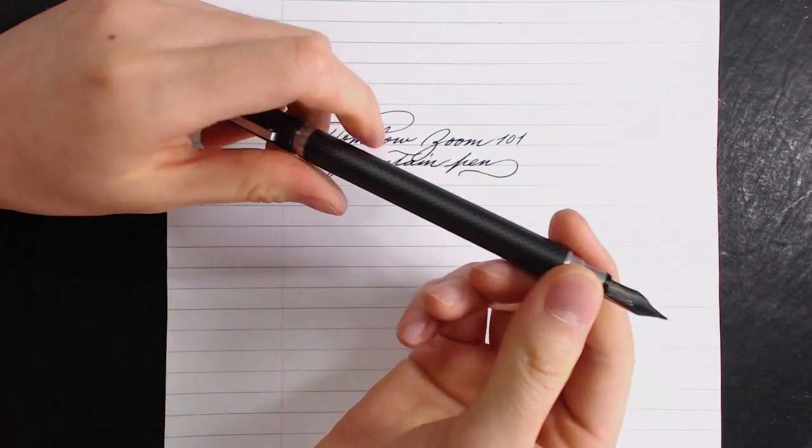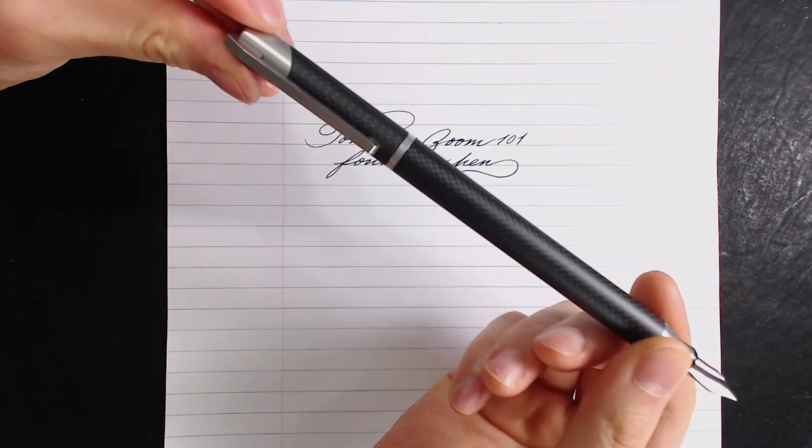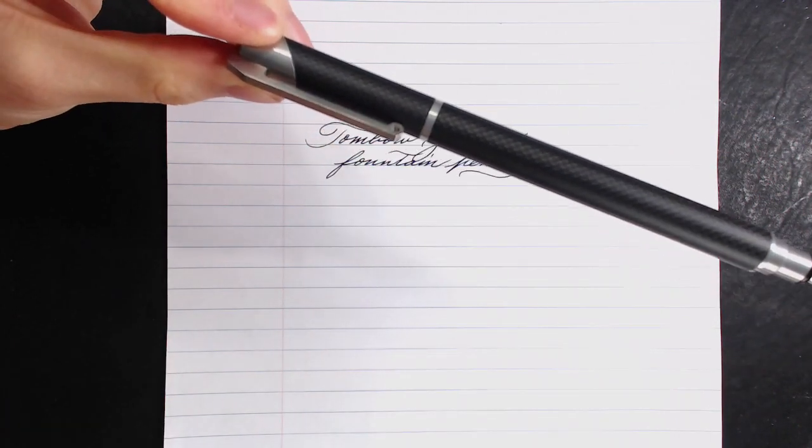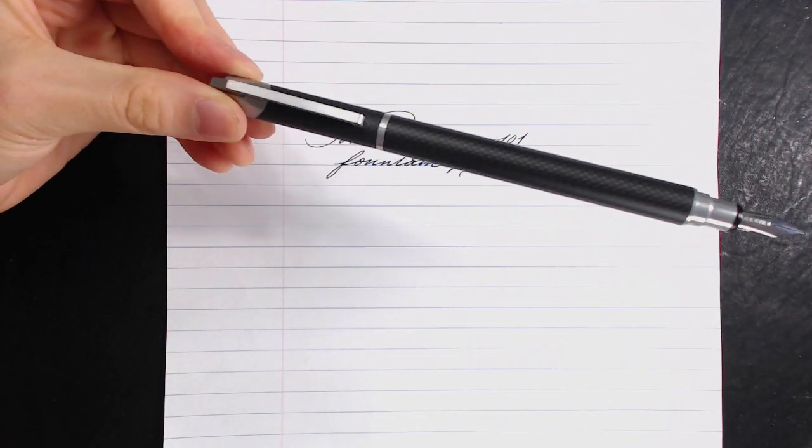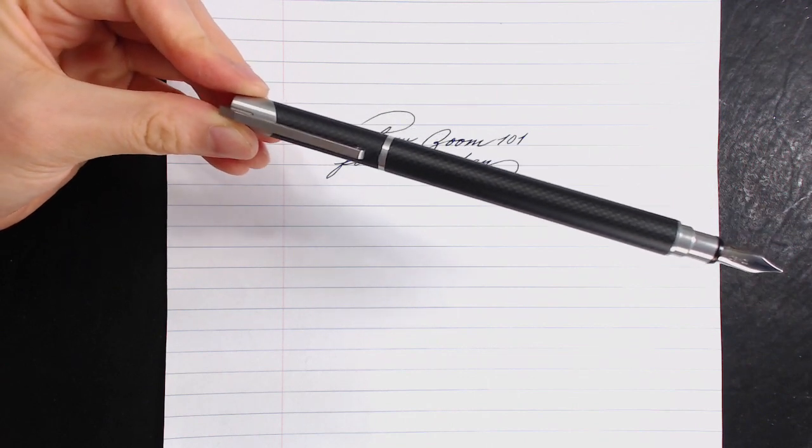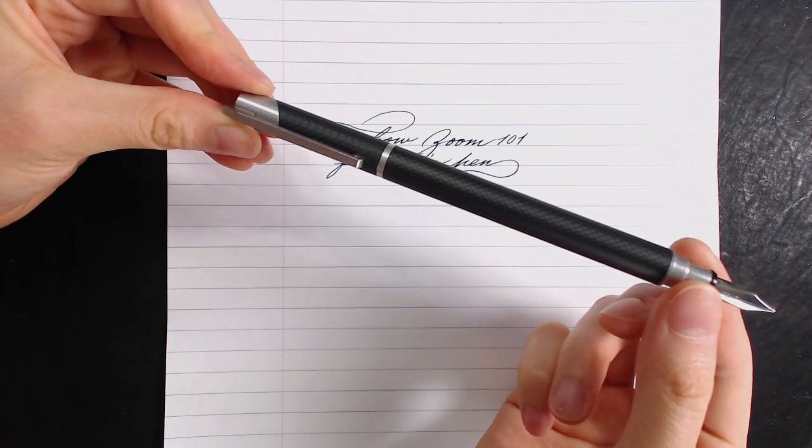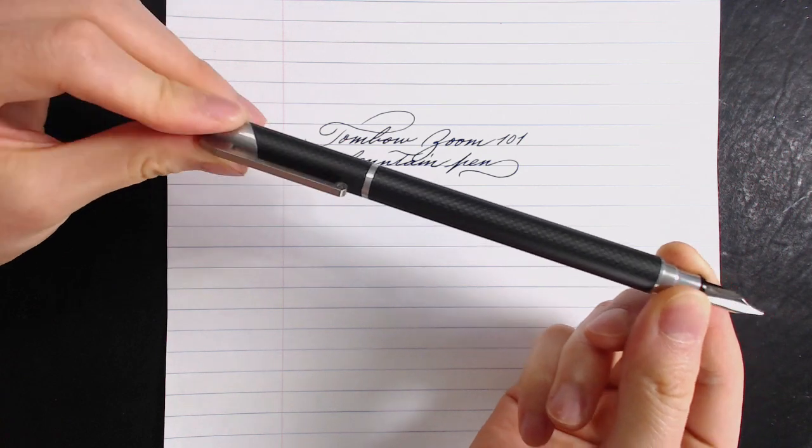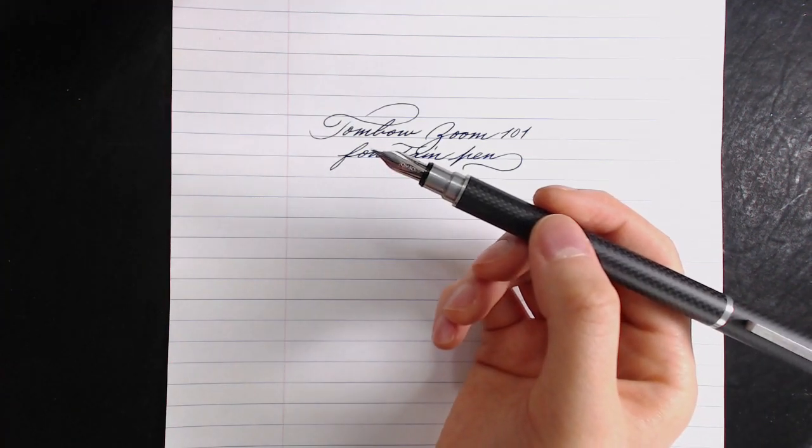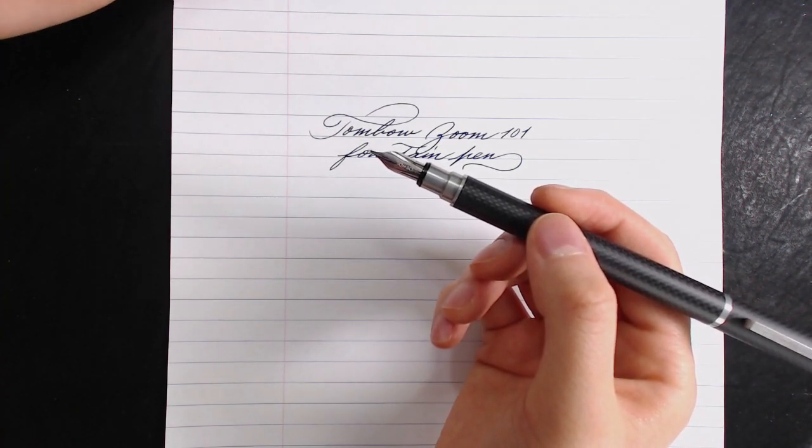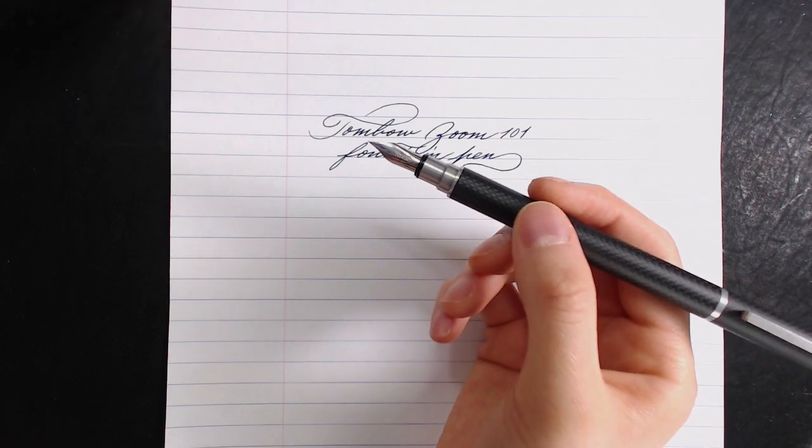The whole body is not all black, as some pictures online may suggest or seem. It is actually a gunmetal color with carbon fiber pattern on it. I'm not sure what material the nib is made from, but it is a very smooth writing nib.